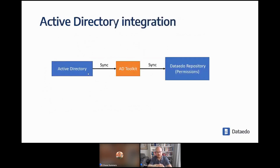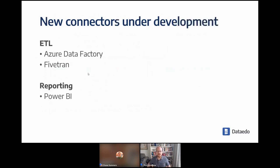Active Directory integration: Data Eto's repository has its own permissions module, and we're building a separate Active Directory toolkit that you can schedule to sync information on users, groups, and permissions from Active Directory. We are also working on new connectors — for ETL we are researching Azure Data Factory, and we already have quite good success importing metadata from Fivetran. And for reporting, as mentioned, that will be Power BI.